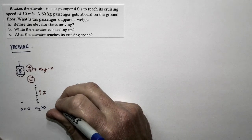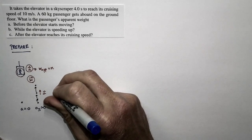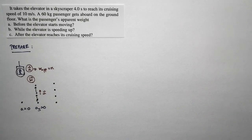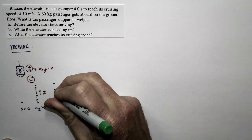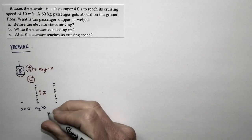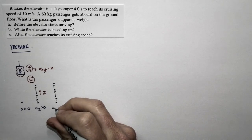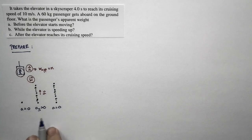In case C, the elevator is moving at a constant cruising speed. It's still moving upward, so I'm still getting velocity vectors going upward, but they're the same length. So in this case the acceleration is zero as well. We've got motion diagrams for all three cases.